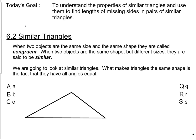Today's goal is to understand the properties of similar triangles and use them to find lengths of missing sides in pairs of similar triangles. We need to understand what a similar triangle is and understand some of the notation that goes with it. You probably looked at things called congruent back in elementary school. When two objects are exactly the same size and exactly the same shape, they're called congruent. But if they're the same shape and different sizes, they're said to be similar.